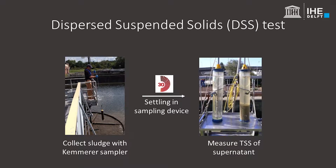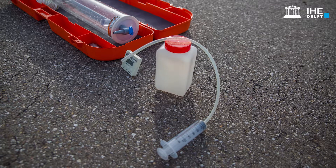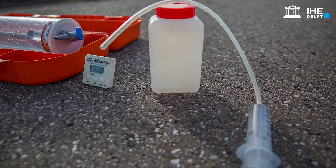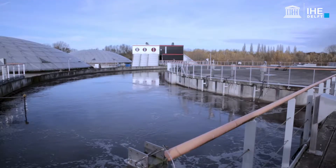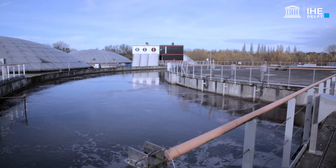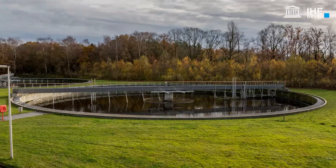A DSS test quantifies an activated sludge sample's state of flocculation at the exact moment and location where the sample is taken. Sampling and settling have to be done in a single container. A DSS test can be performed at any location between the activated sludge tank and the effluent weir. A typical sampling location is the centre well of the secondary settling tank.